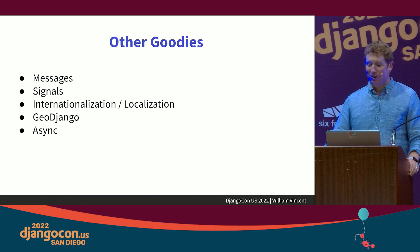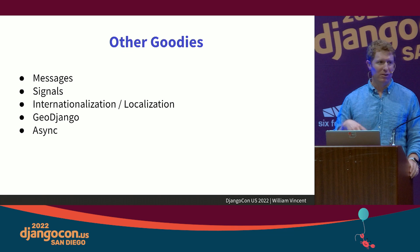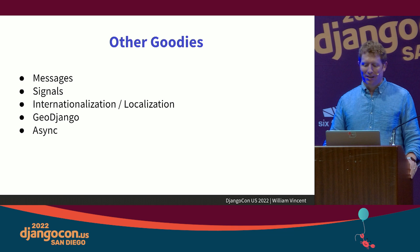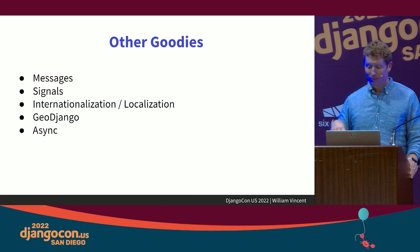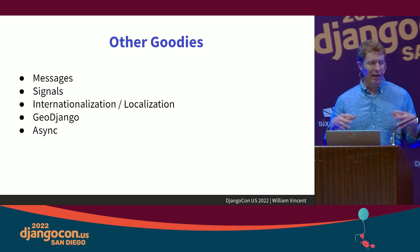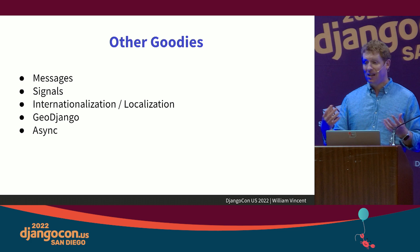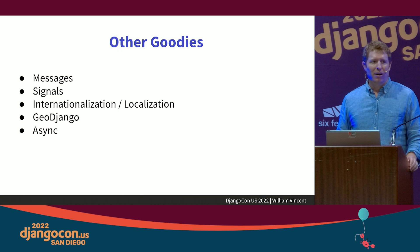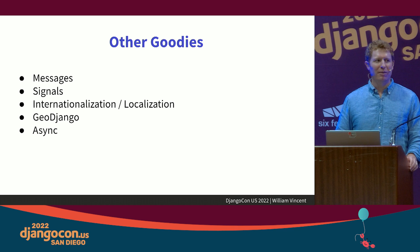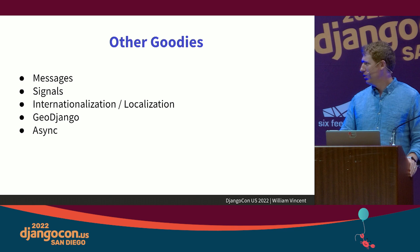Other goodies. Messages: there's a built-in framework for adding messages, especially around forms — success or failure. You can loop it into Bootstrap. Use messages. Signals: a way to be notified when something occurs elsewhere in the framework — senders and receivers. A good example is sending email. Signals are enticing when you learn about them, but they can easily be abused. Use signals if you have to, but be aware of that.